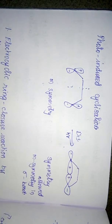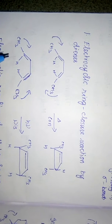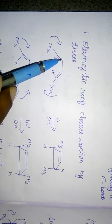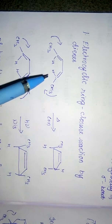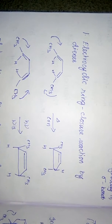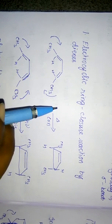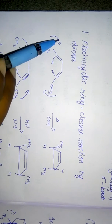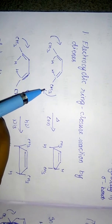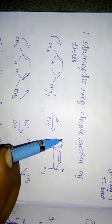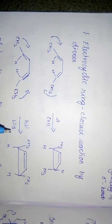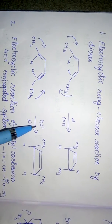Now we look at electrocyclic ring closure reactions of dienes. Consider a diene — a 4π system. Under thermal conditions, 4π systems undergo conrotation. In conrotation, if one carbon rotates clockwise the other also rotates clockwise, so one methyl group goes up and the other goes down, giving a trans configuration — the trans isomer.